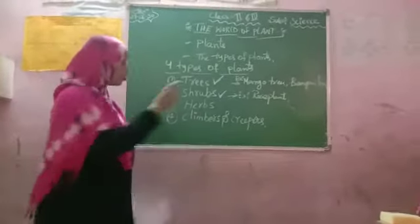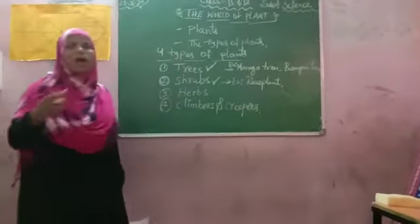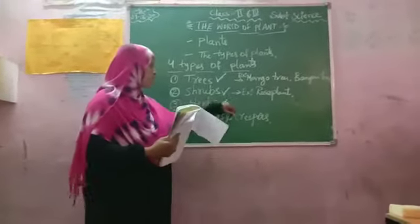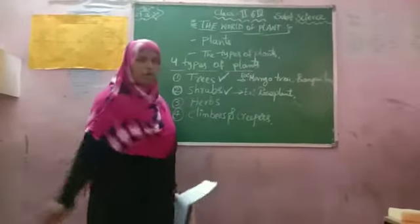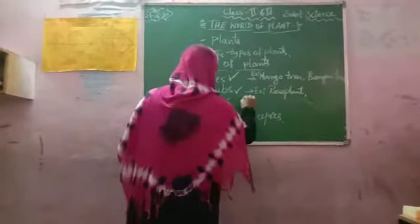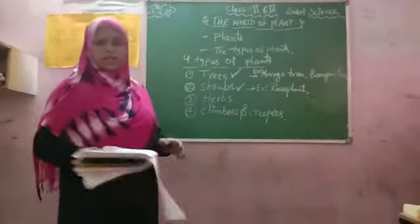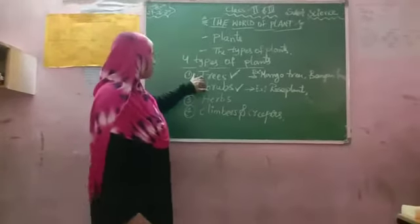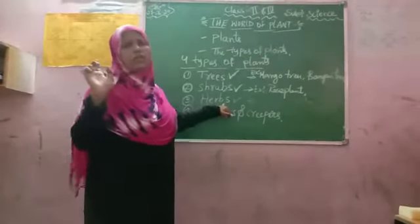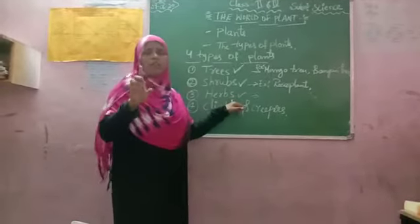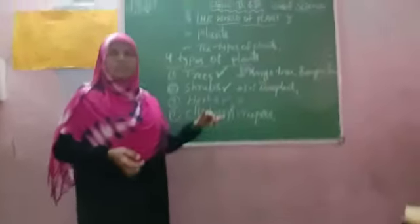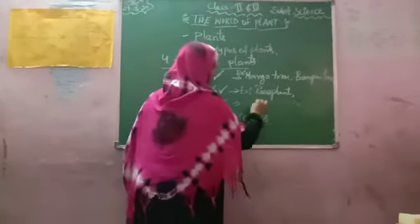Shrubs spread out in all directions and are smaller than trees. Some branches touch the ground. For example, rose plant and cotton plant. Next is herbs. Herbs are very small plants. They live for only four or five days. Herbs are useful as medicines. For example, tulsi.